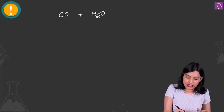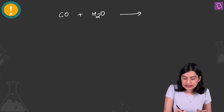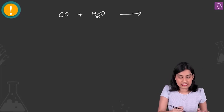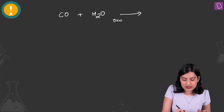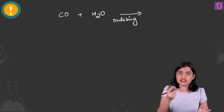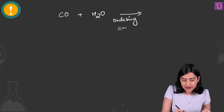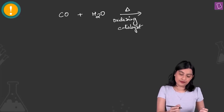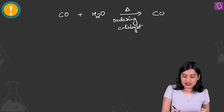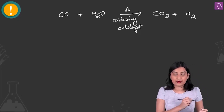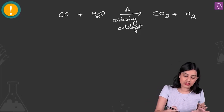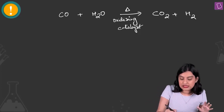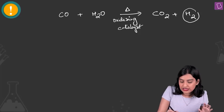The water gas is treated with an oxidizing catalyst like Fe₂O₃ plus Cr₂O₃, and heat. The product obtained is CO₂ plus H₂, and if you balance it, you see that a large amount of hydrogen gas is released.